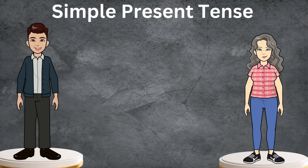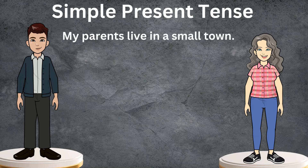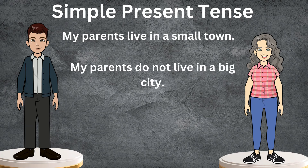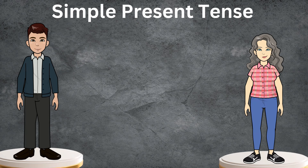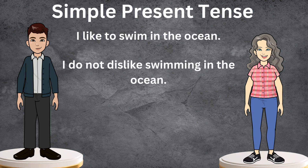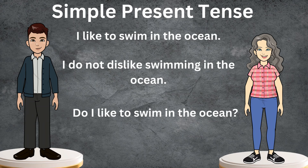My parents live in a small town. The negative sentence would be: my parents do not live in a big city. The interrogative one is: do my parents live in a small town? Nice job, Hannah. Here is a new one: I like to swim in the ocean. The negative one is: I do not dislike swimming in the ocean. The interrogative one is: do I like to swim in the ocean?